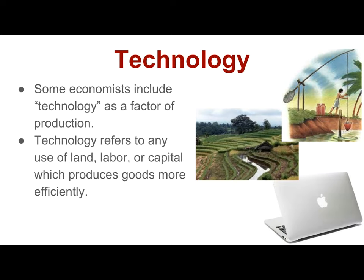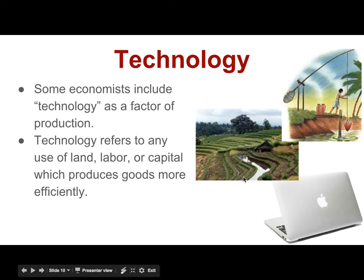Technology is something some economists would include as a fifth factor of production, but it fits well with entrepreneurship — it's the ideas that lead to advancement. Technology can refer to any use of land, labor, or capital which produces more goods efficiently. It can be just a change in technique: whereas we used to plow fields in straight lines, now we follow the curve of the earth — that is technology. Redirecting stream water to flow through farm fields — that is technology. From basic simple machines to complex machines, all are included in technology.